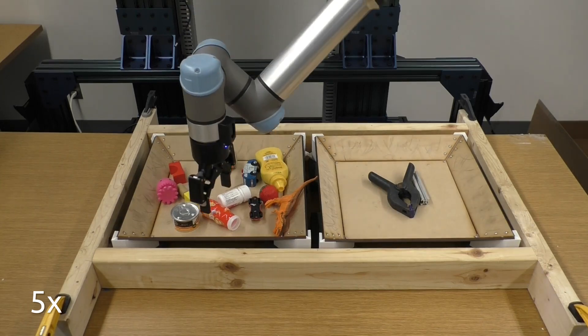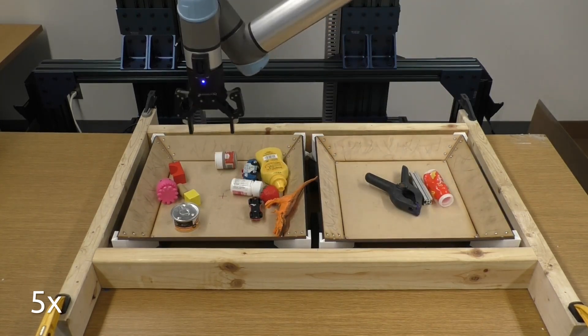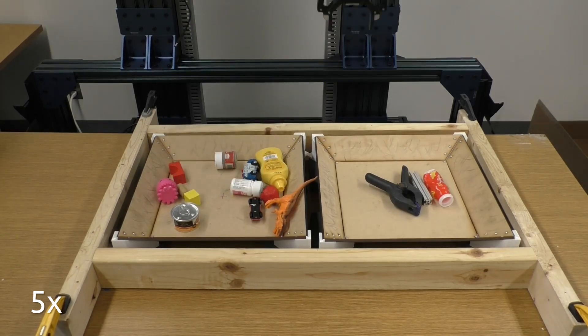The robot is given 15 attempts to move the objects in the bin and then it switches to the other bin. It also switches if it detects the bin is empty.